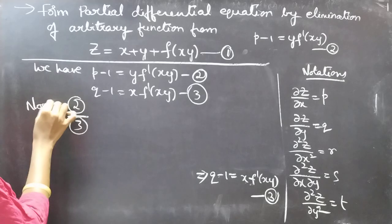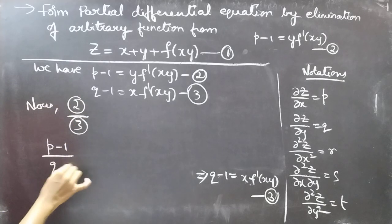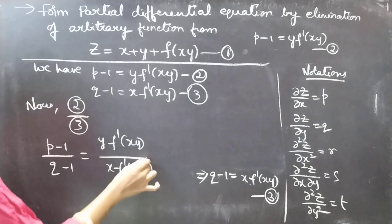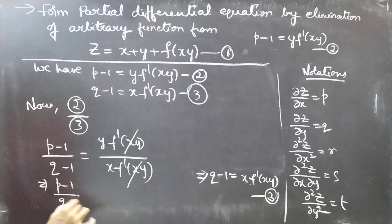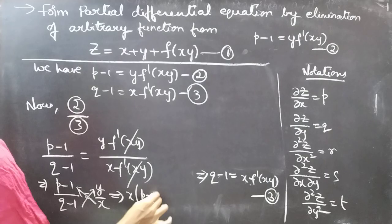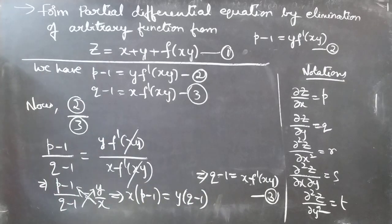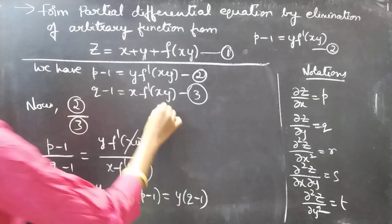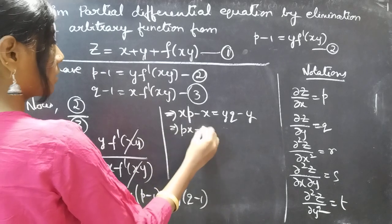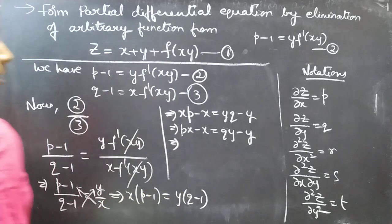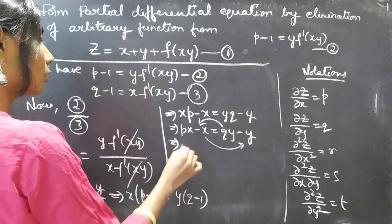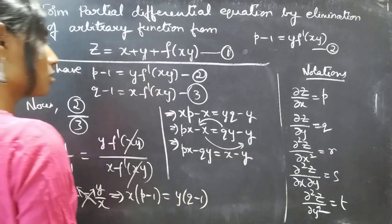Dividing equation 2 by equation 3: (p − 1)/(Q − 1) = [y·f'(xy)] / [x·f'(xy)]. The f'(xy) cancels, giving (p − 1)/(Q − 1) = y/x. Cross-multiplying: x(p − 1) = y(Q − 1), which gives xp − x = yQ − y, or px − Qy = x − y, which is the required partial differential equation.